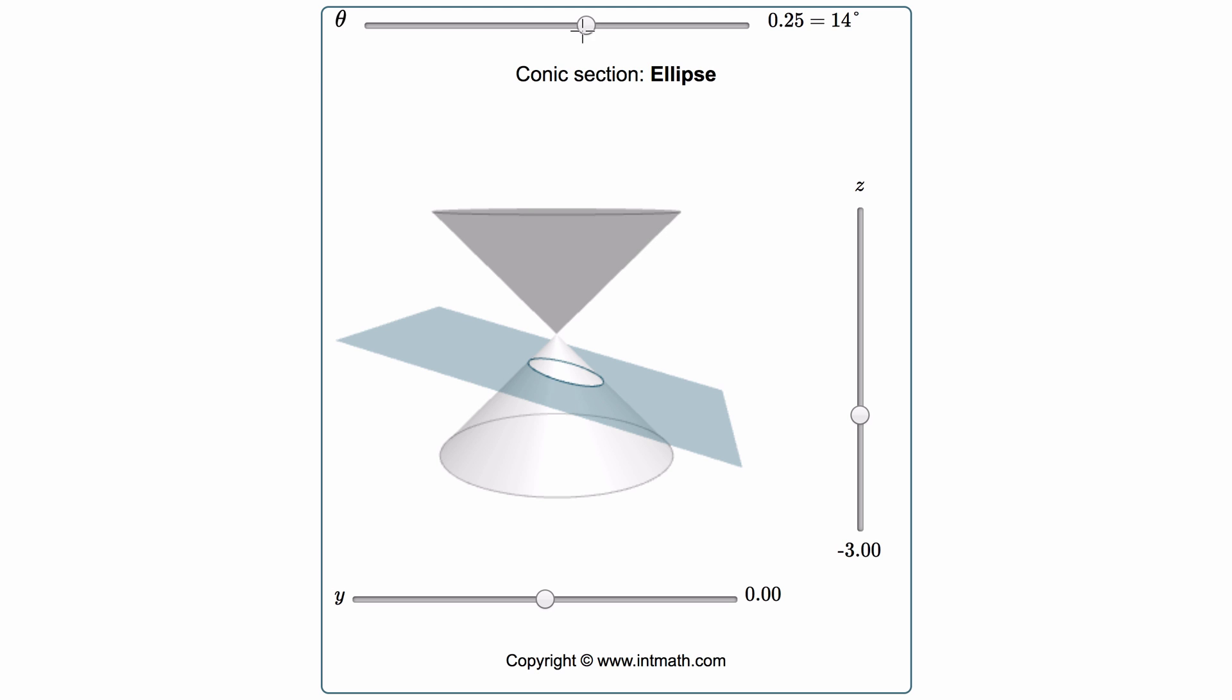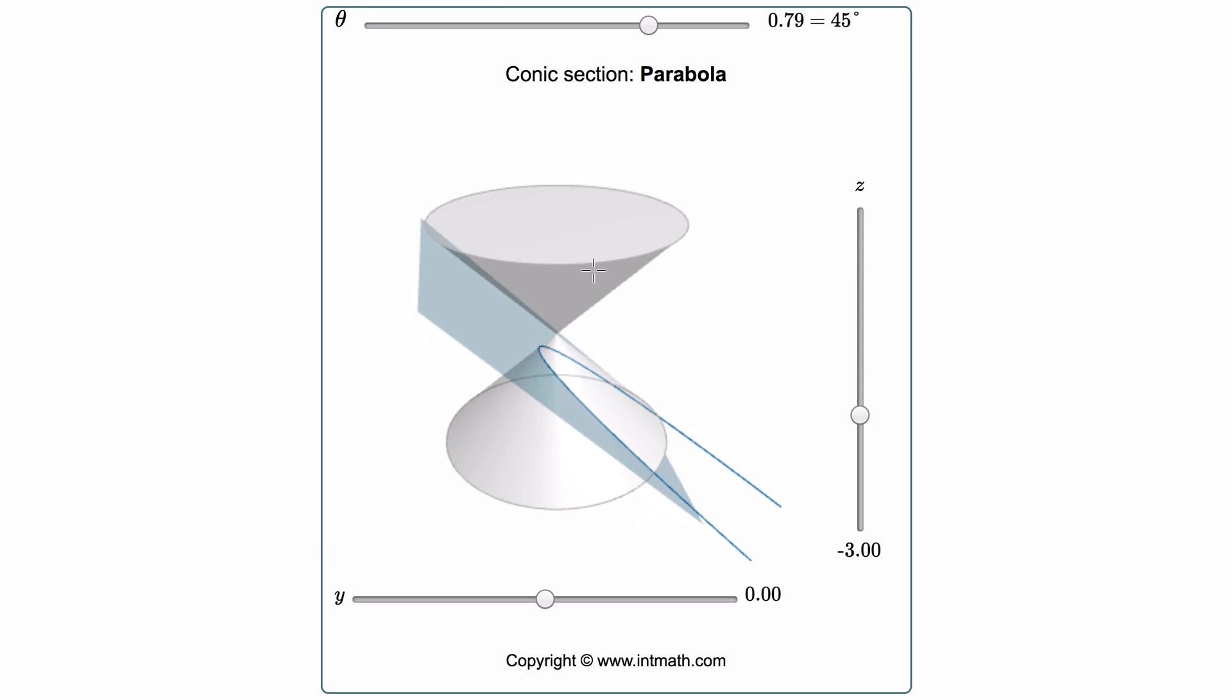If we continue to change this degree measure and make the plane parallel to the side of our cone, at about 45 degrees, we get a parabola. It's going to intersect only one of the nappes. It never hits the other one because its side is parallel, and as a result it gets this curve which we know as a parabola.